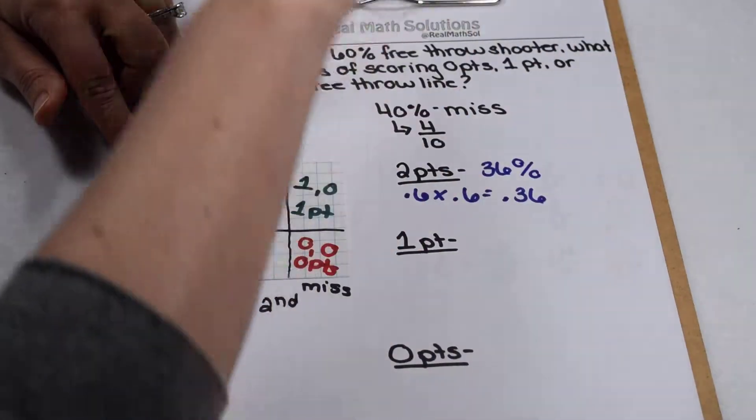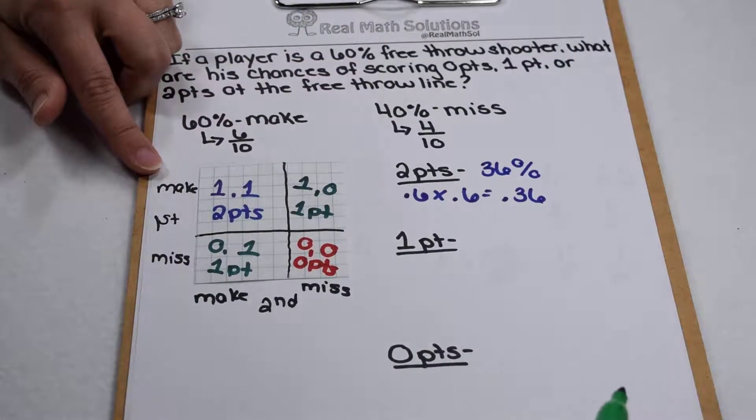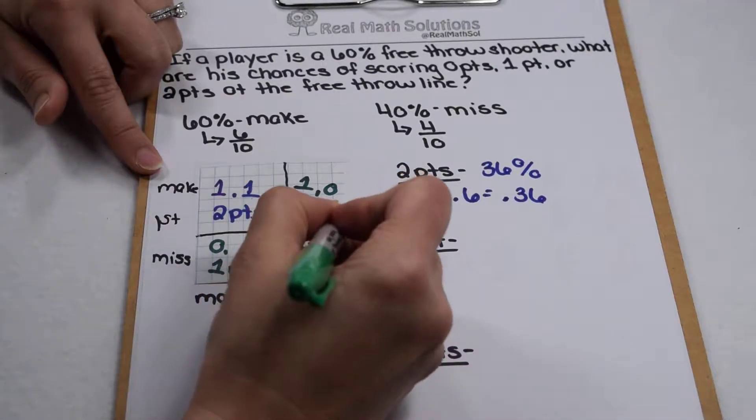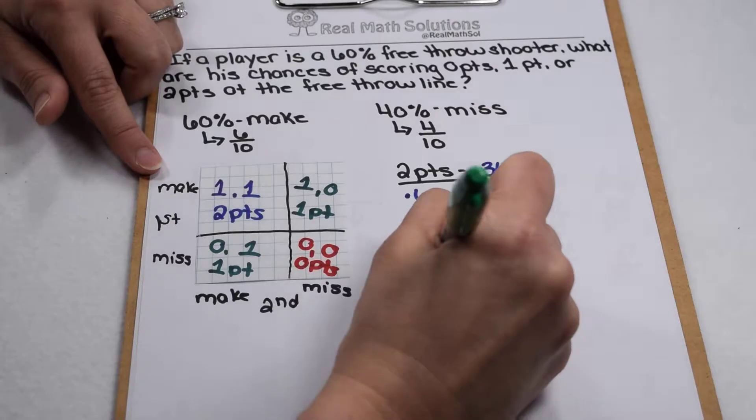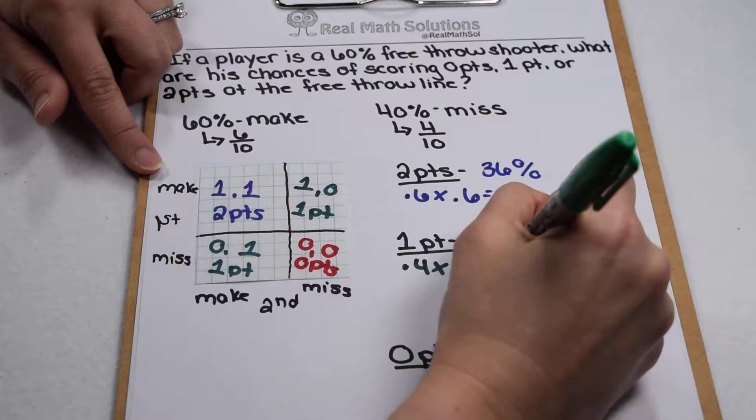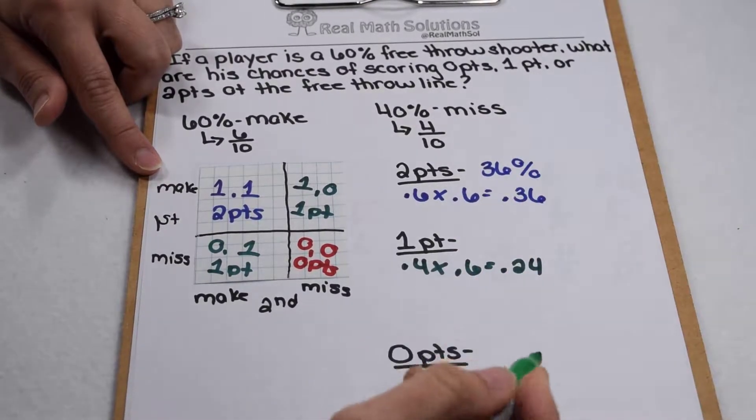For 1 point, I have 4 tenths by 6 tenths. So that would represent 24 hundredths.